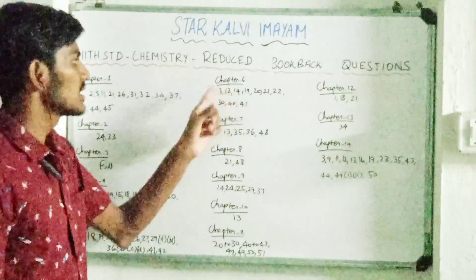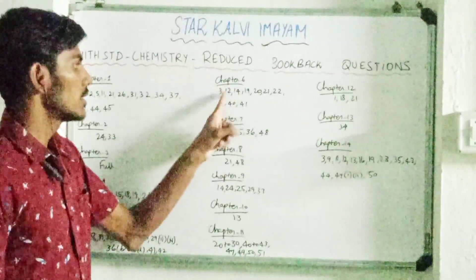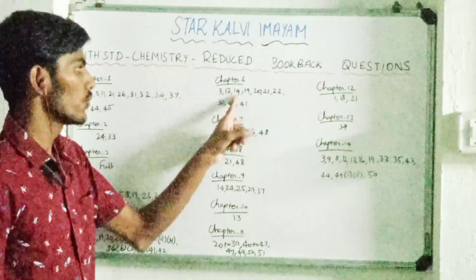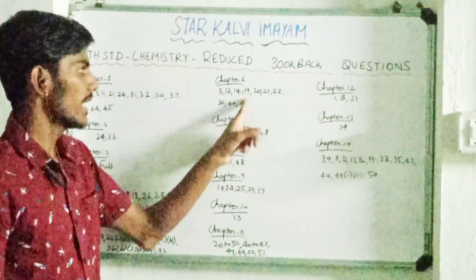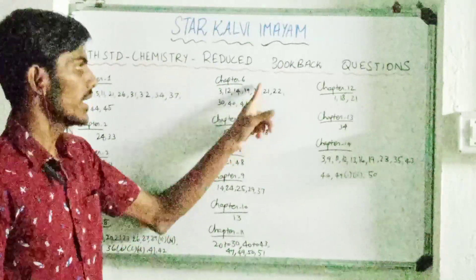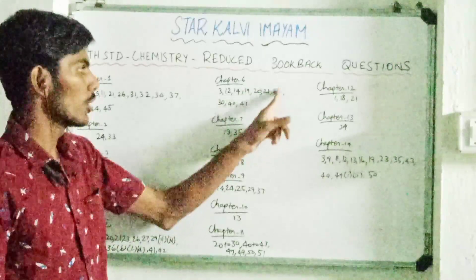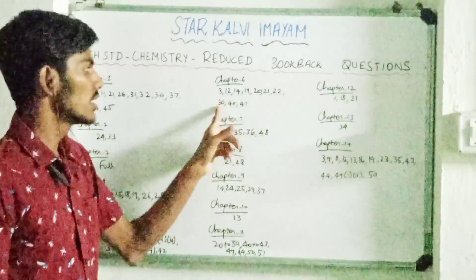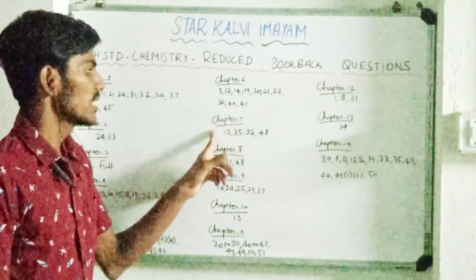Next, Chapter 6 question numbers: 3, 12, 14, 19, 20, 21, 22, 30, 40, 41.